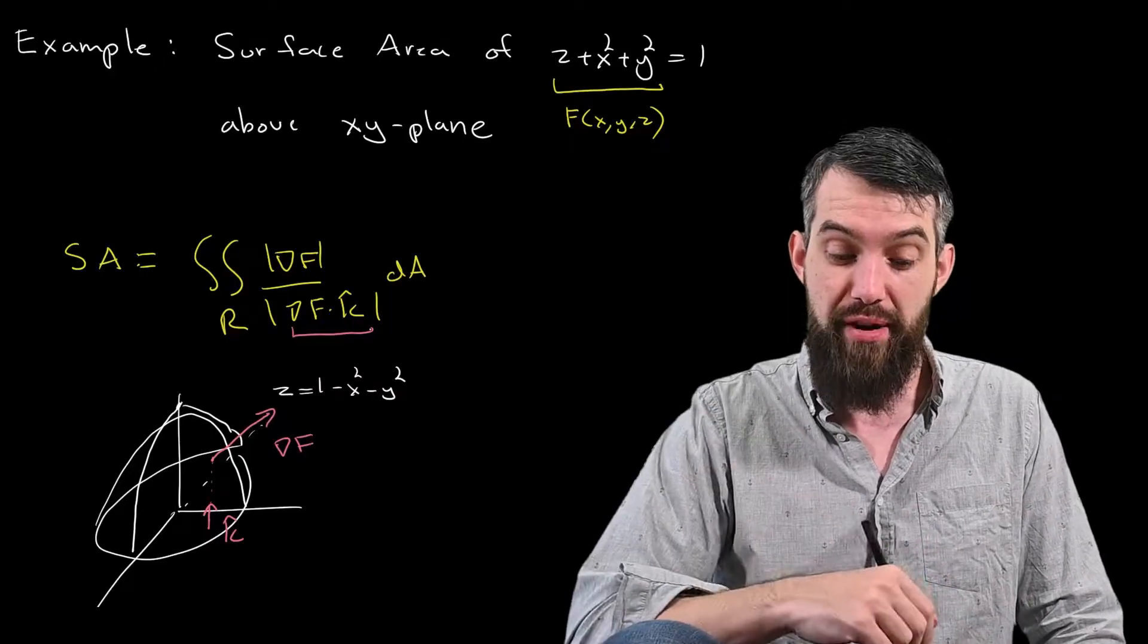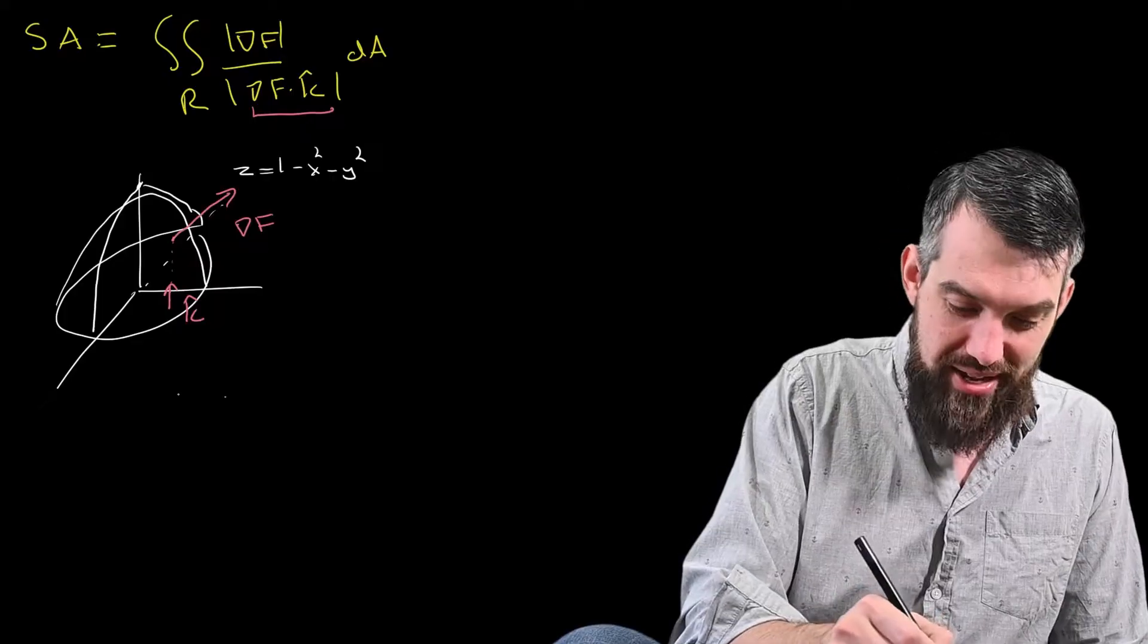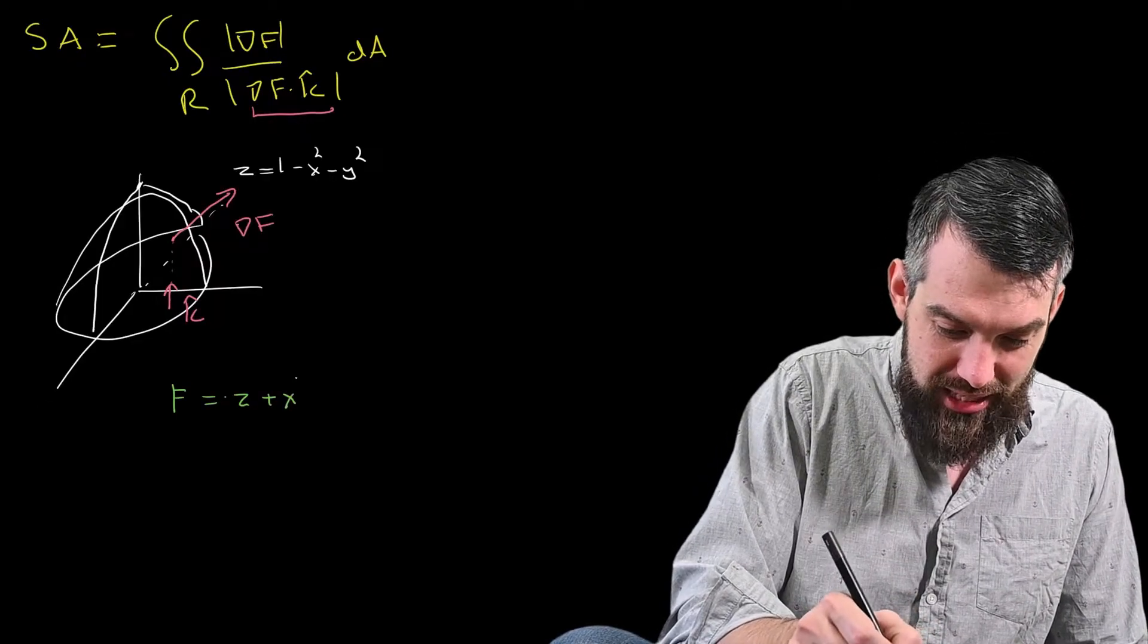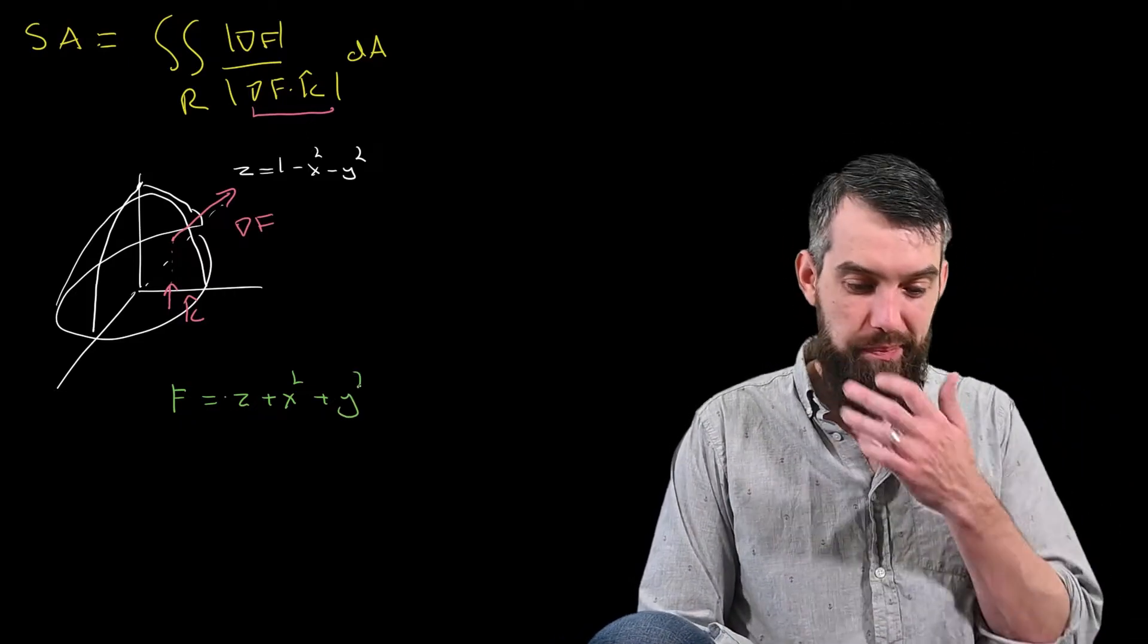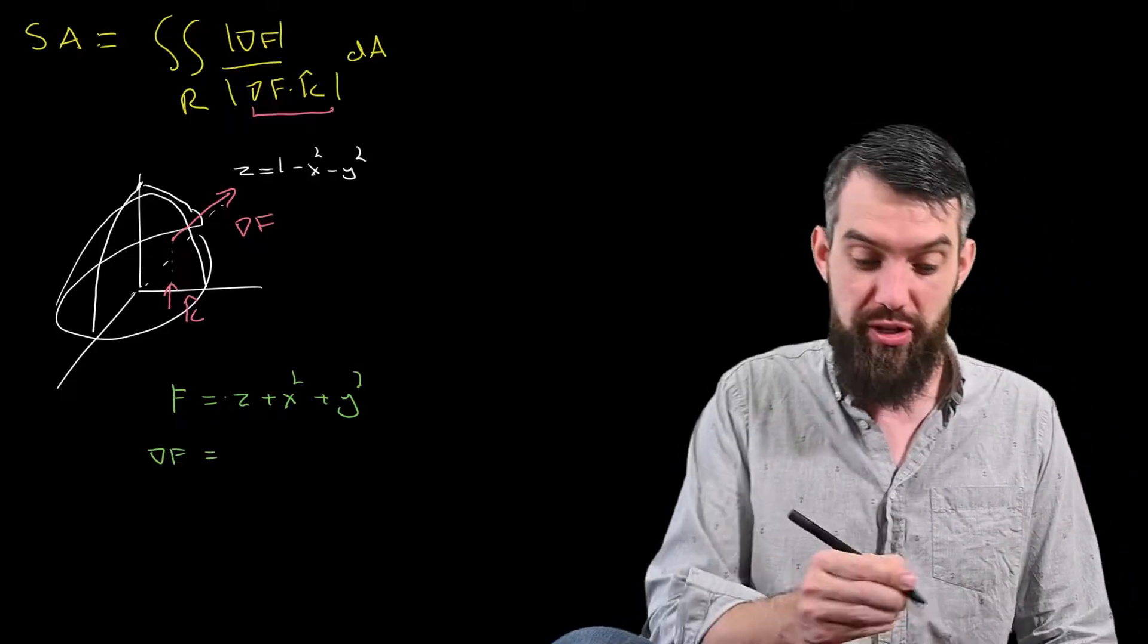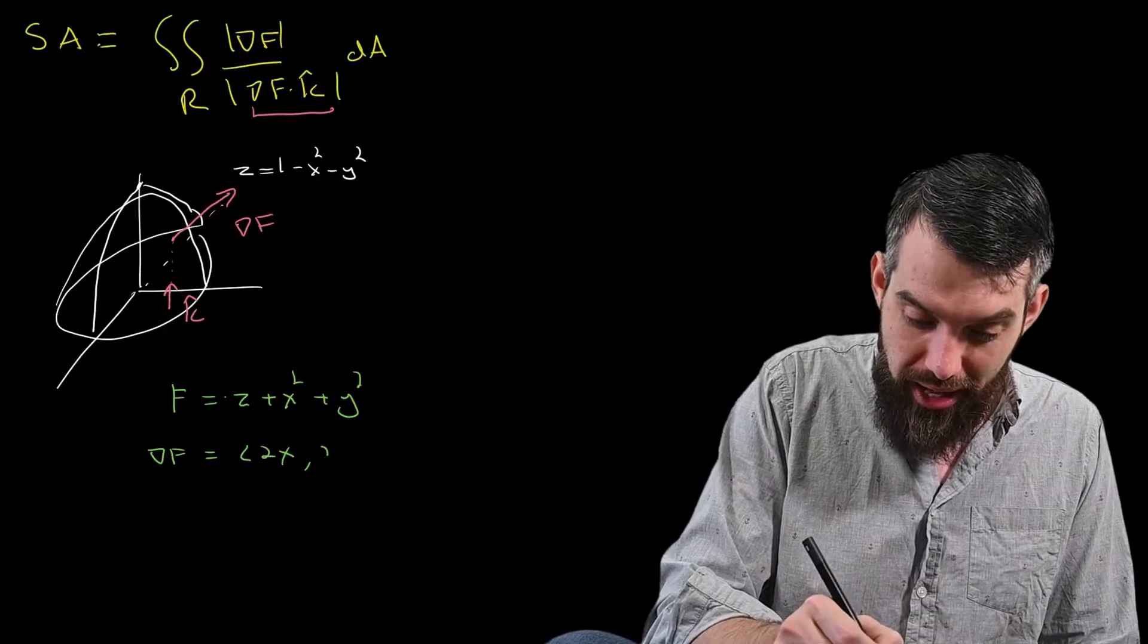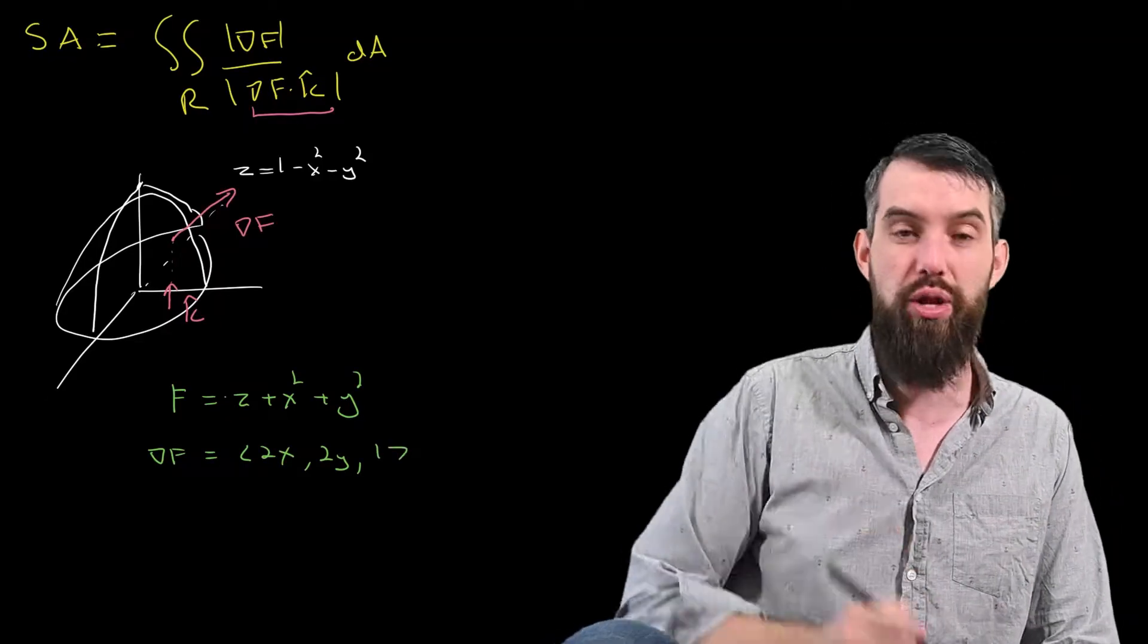Okay, so we had to compute gradient of f, gradient of f dot k, and do these computations. I better write down f one more time here, otherwise I'm going to forget it. It was z plus x squared plus y squared. We were setting that equal to 1. Thus, gradient of f is partial derivative with respect to x is going to give me 2x. Partial derivative with respect to y, 2y. And partial derivative with respect to z is going to give me just 1.